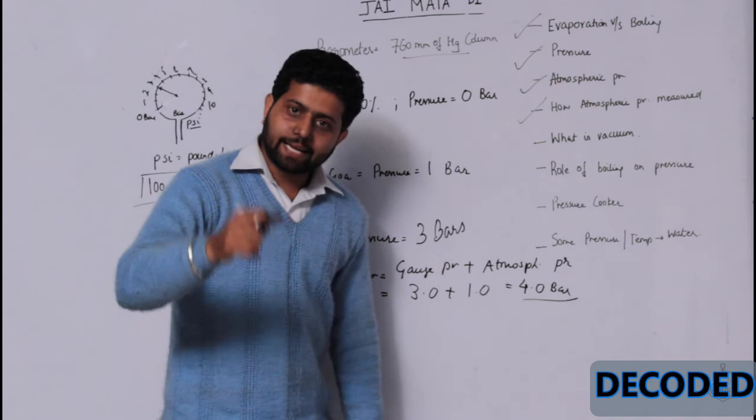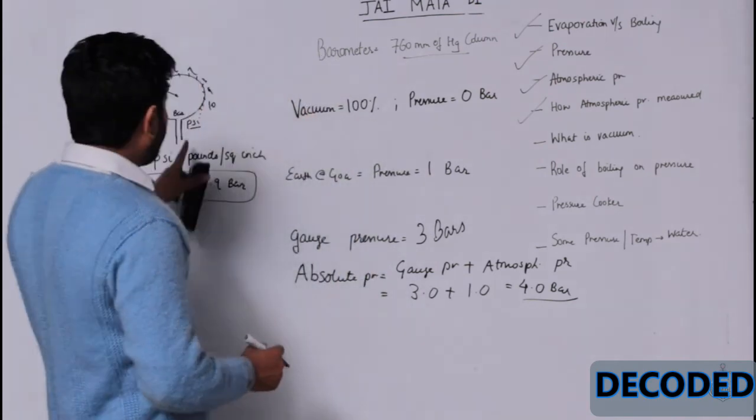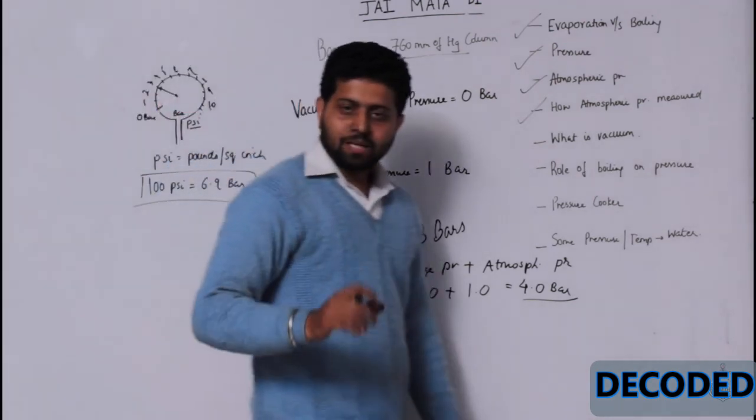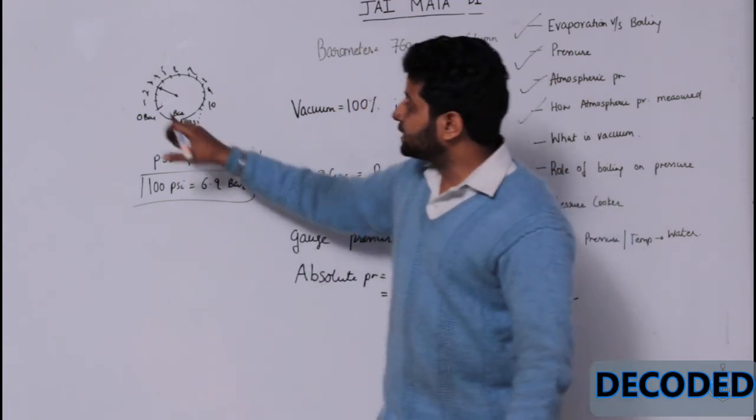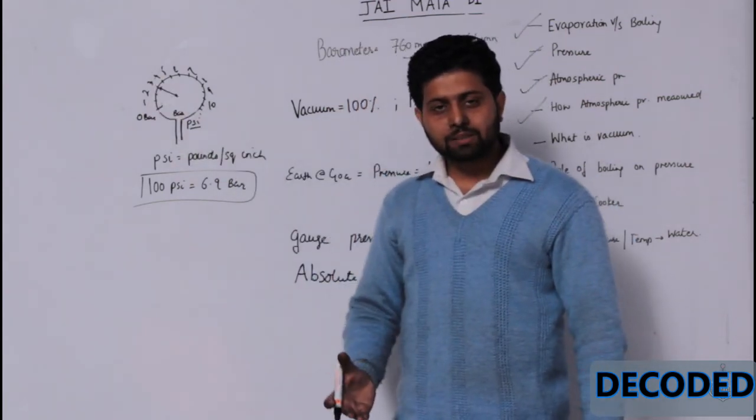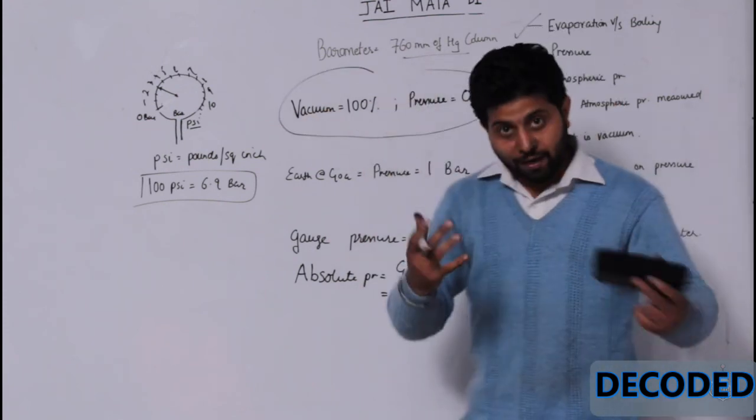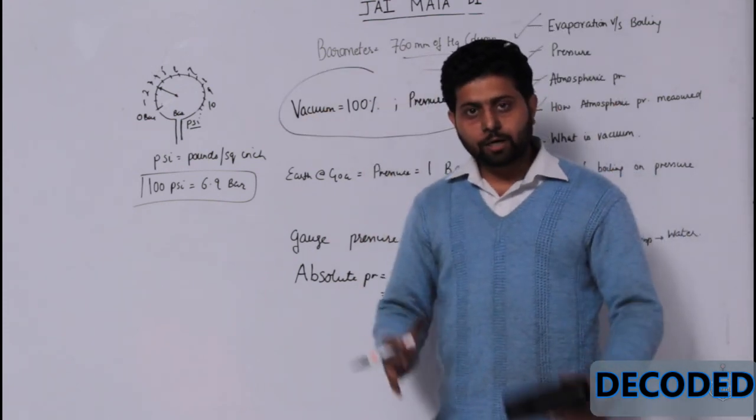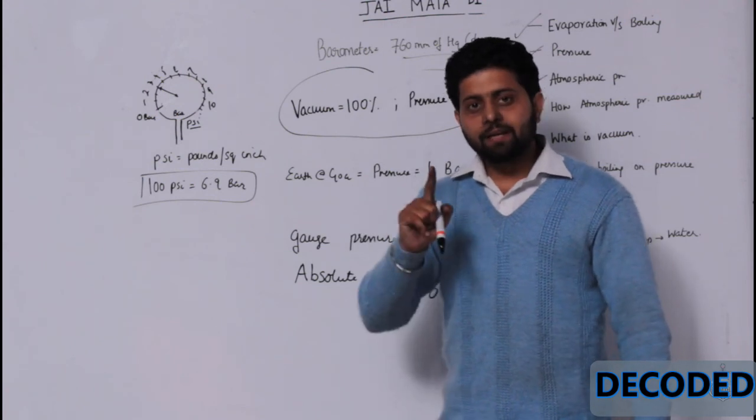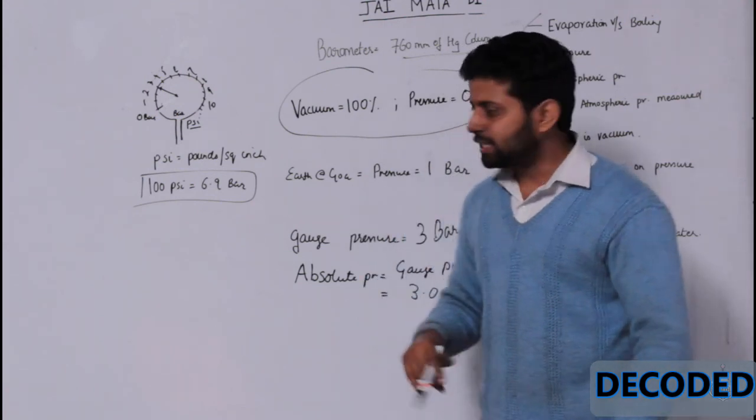Now I will take another type of pressure gauge. This type of pressure gauge is called a pressure gauge because it is measuring pressure. But sir, you have told there is vacuum also. So I have to measure vacuum. What kind of pressure gauge am I going to require? That is called a vacuum gauge.